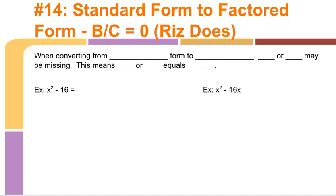Today we're going to be talking about converting standard form to factored form, but the difference is we're going to look at what happens when B or C equals 0.